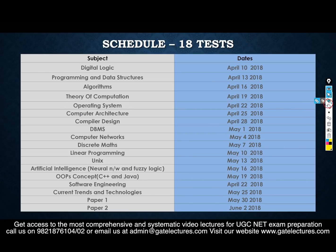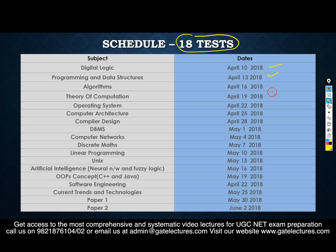Now you can see the schedule. For the 18-test package, the first test is Digital Logic, the second is Programming and Data Structures on 13th April, Algorithms on 16th April, and so on. These are the publishing dates for each test.